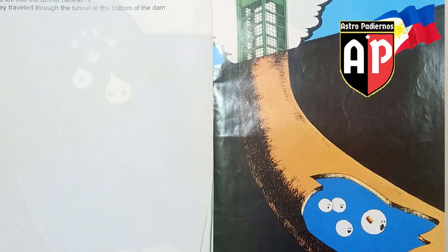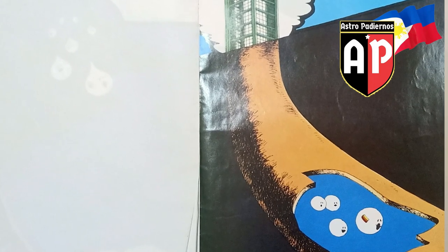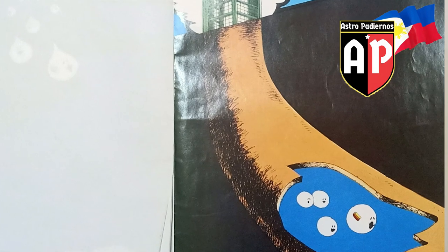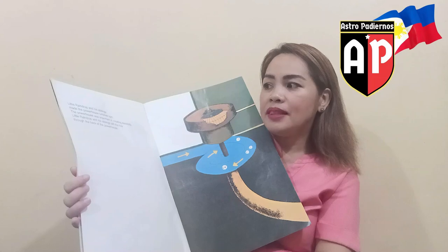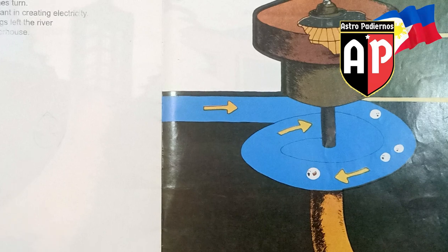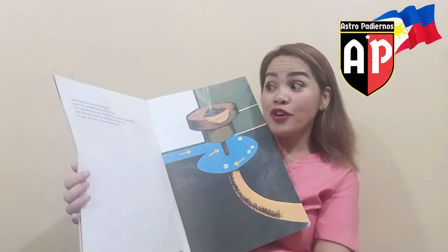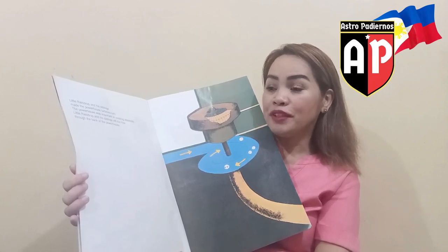The waves brought Little Raindrop and his siblings to the tower near the dam. They entered the tower and fell into the tunnel beneath it. They traveled through the tunnel at the bottom of the dam. Little Raindrop and his siblings made the powerhouse turbines turn. The powerhouse was important in creating electricity.